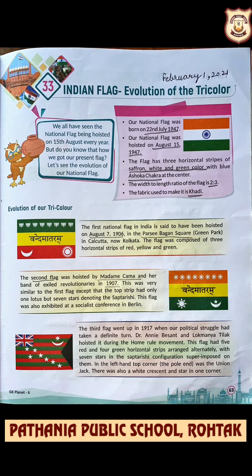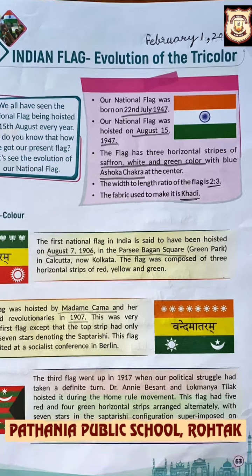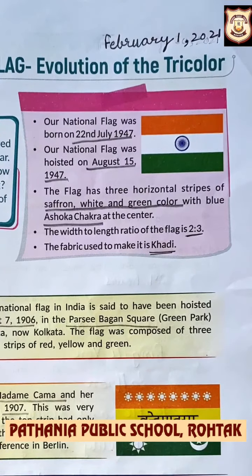Now students, this next chapter is very interesting. In this chapter we will learn about our National Pride — the Tri-Color. The National Flag was born on 22 July 1947 and it was first hoisted on August 15, 1947. It has three horizontal stripes of saffron, white, and green color with a blue Ashok Chakra at the center. The width-to-length ratio of the flag is 2:3, and the fabric used to make it is Khadi.